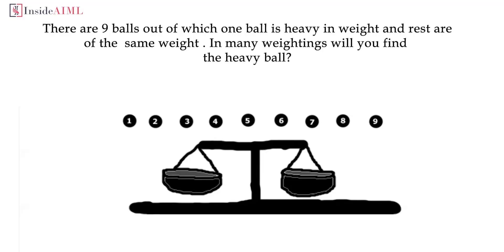Situation one: the heavy ball is not among the six balls on the scale. In that case, both sides will be balanced, meaning the three balls left aside contain the heavy one. Remove the six balls, take two of the remaining three, and place them on the scale. If balanced, the third leftover ball is the heavy one. If the scale tilts, the side that tilts contains the heavy ball. That's two weighings.